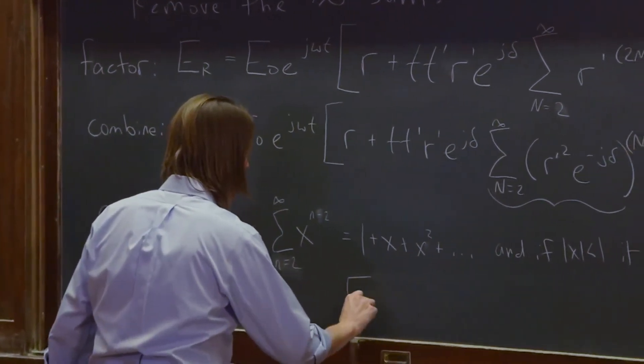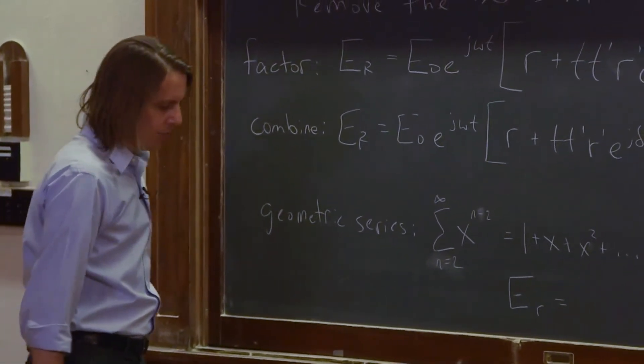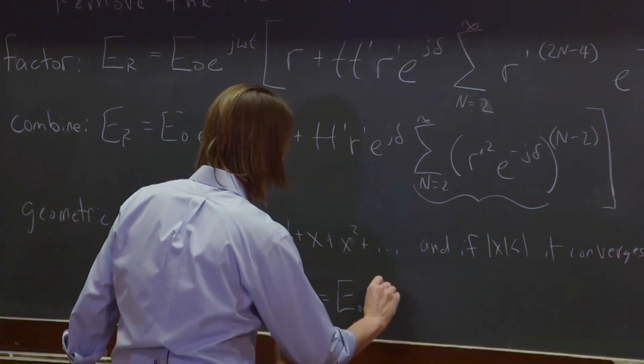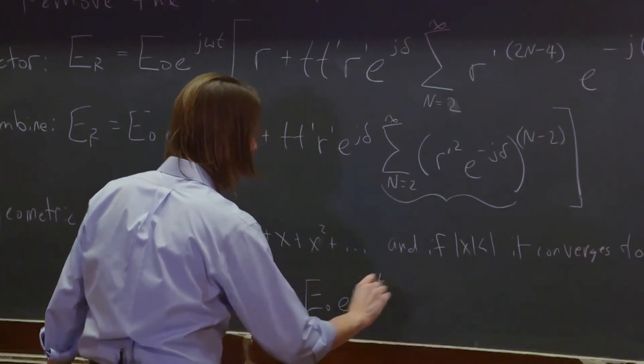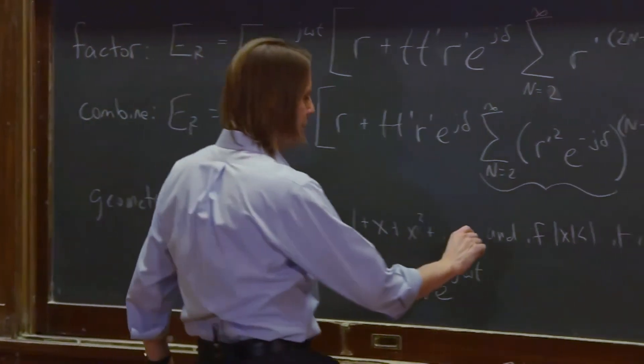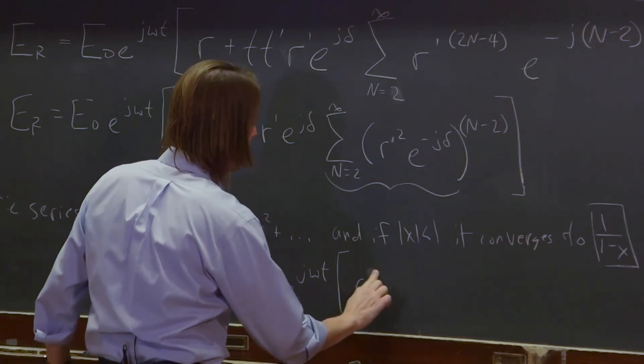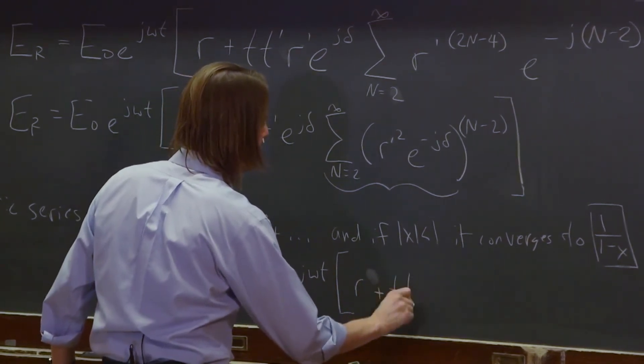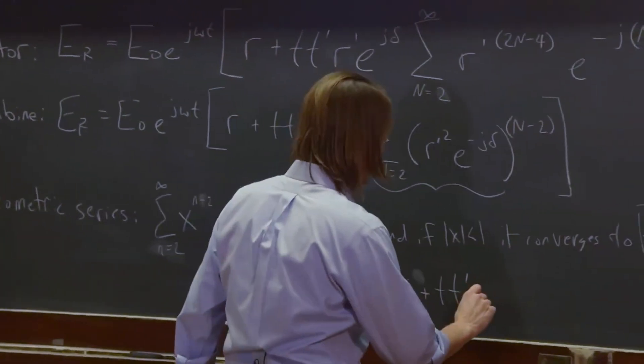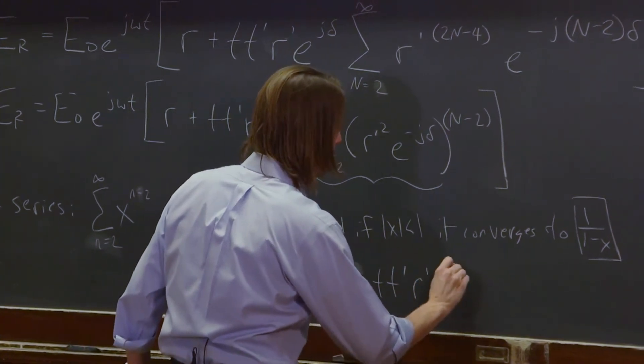We're going to say that E_R equals something. E equals E naught, E to the J omega T. All right, so we just copied that down. Times this whole thing, which we're leaving as R plus. Okay, we're leaving this as R plus T, T prime, R prime, E to the minus J delta, R prime, E to the minus J delta.